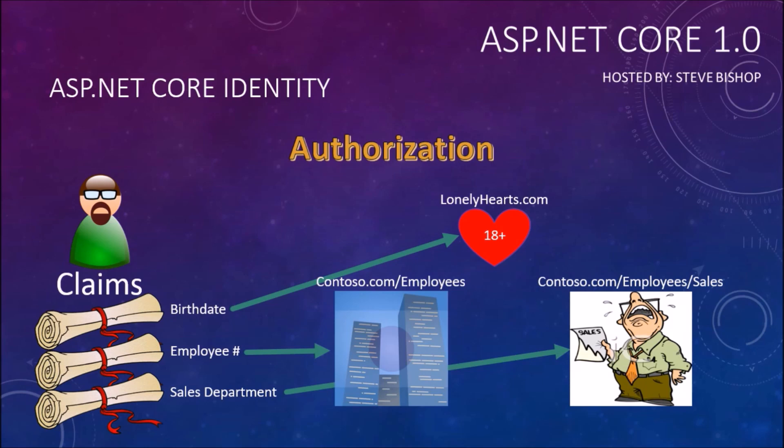Having one of these claims really helps to determine what type of access a user should have. Do they have an employee number? If they do, let them into the employees section; if they don't, then don't let them in. You can also add your own custom claims at any point during this process.